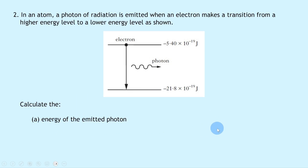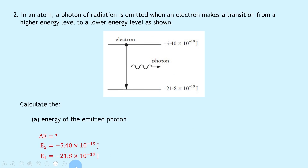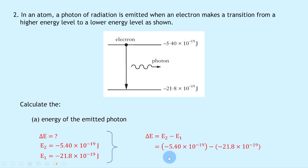Part a says: calculate the energy of the emitted photon. Remember that the energy of the emitted photon must equal the energy difference between the two energy levels. The upper energy level E2 is minus 5.40 × 10⁻¹⁹ joules, and the lower energy level E1 is minus 21.8 × 10⁻¹⁹ joules. Writing down our expression: ΔE = E2 − E1.